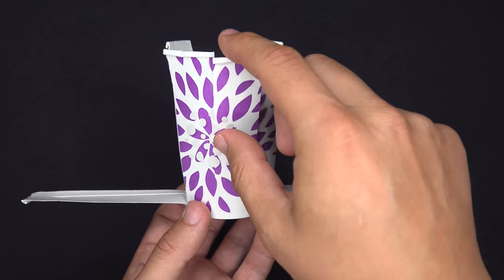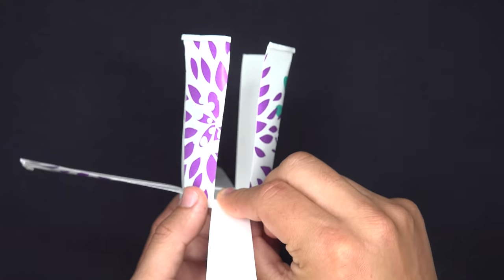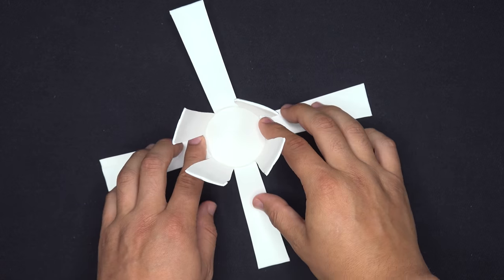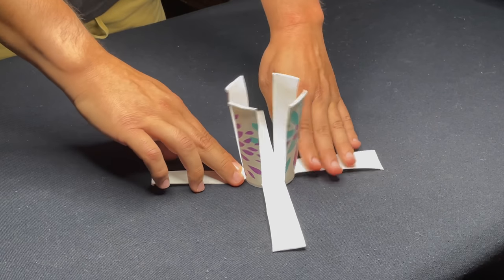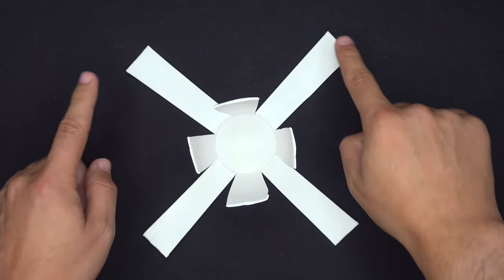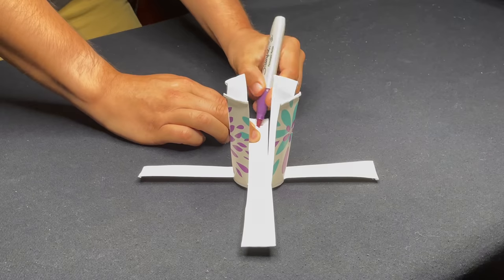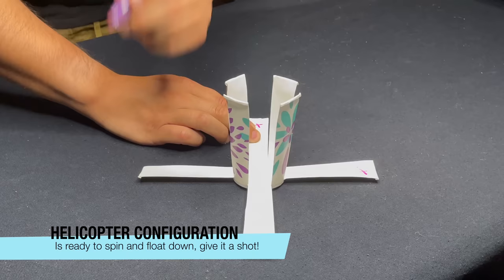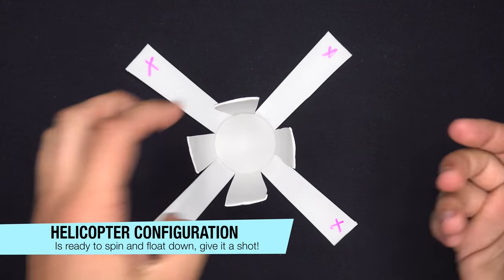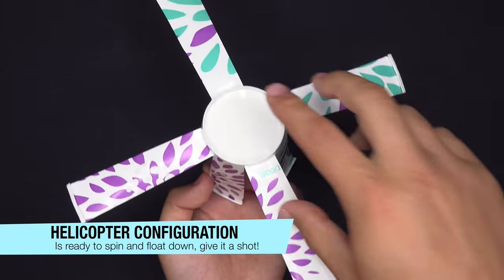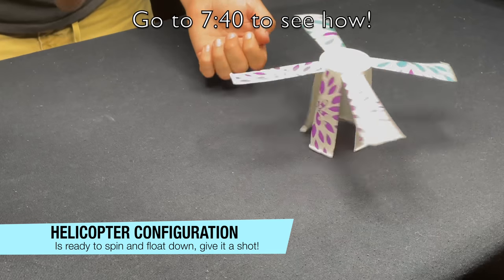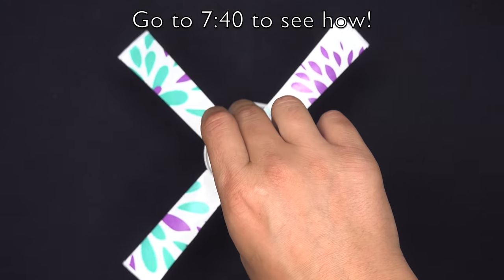Now we could set it down on the table and flatten the four sections which we just folded down. I'm just going to make an X on the sections we folded down with a marker. Once we've done that, at this point this is the helicopter configuration, and if you flip it over and spin it, it'll float down as a helicopter which I'll show a bit later.